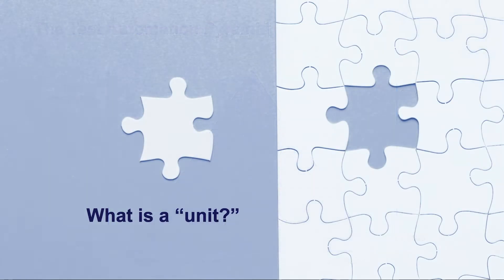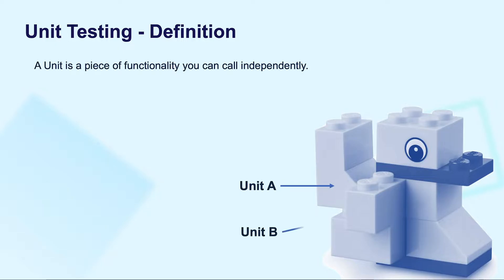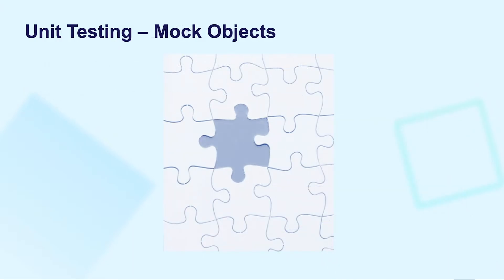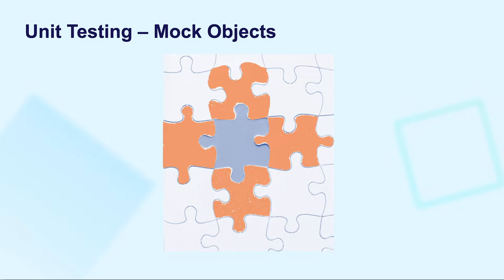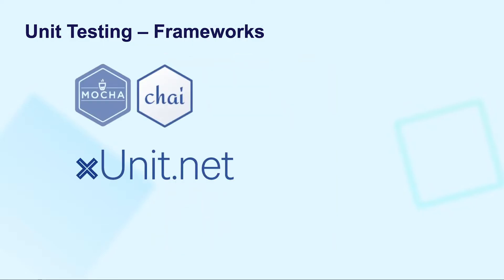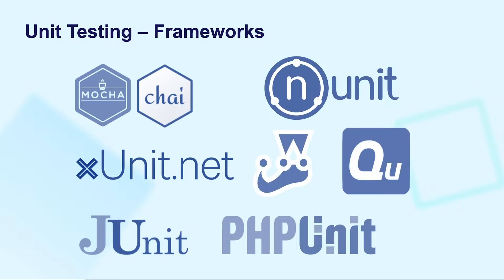Before getting more in-depth about unit testing, let's determine the definition of a unit. In short, a unit is a piece of functionality you can test independently on multiple aspects and functions. For instance, each unit corresponds to each small element of the Lego duck which can be separated. Unit tests call a function with different parameters and receive expected values. In this process, external dependencies are removed by applying a test implementation or a mock object created by a testing framework. Thus, what you need here is a suitable unit testing framework to support your programming language.